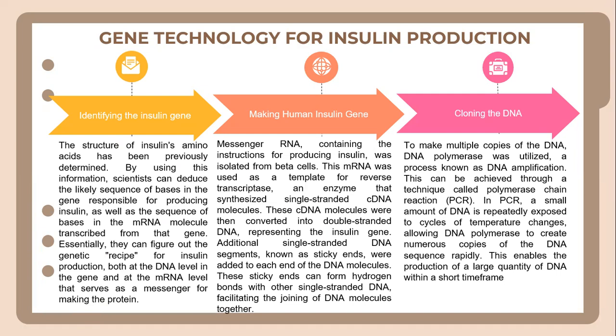The next step is making the human insulin gene. The messenger RNA containing the instructions for producing insulin was isolated from beta cells. This mRNA was used as a template for reverse transcriptase, an enzyme that synthesizes single-stranded cDNA molecules. These cDNA molecules were then converted into double-stranded DNA representing the insulin gene. Additional single-stranded DNA segments known as linkers were added to each end of the DNA molecules, which can form hydrogen bonds with other single-stranded DNA.